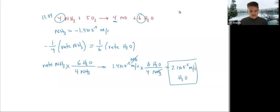Let's see if that makes sense. Yeah, that makes sense, because our coefficient of water is six, so that means it should have a higher rate. We go from 1.4 times 10 to the minus 5 to 2.1, so it is a little bit higher rate.